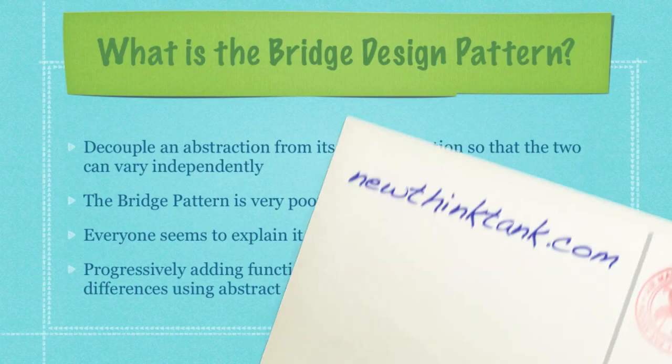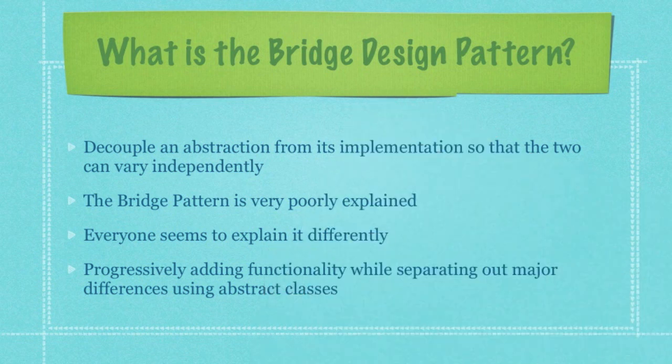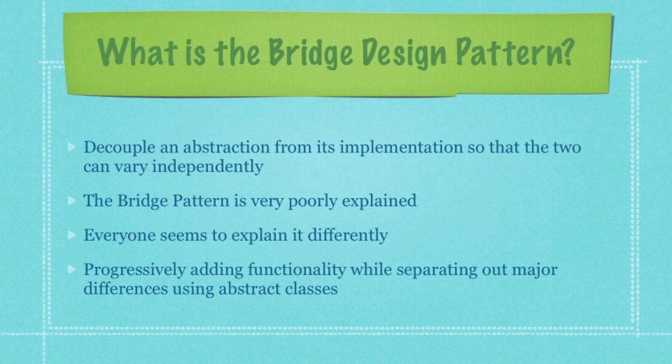So what is the bridge design pattern? The official definition is to decouple an abstraction from its implementation so that the two can vary independently. That is a bunch of gobbledygook, and I have found through numerous different tutorials that the bridge pattern is often very poorly explained or glossed over completely, and everyone seems to explain it differently. My basic definition is to progressively add functionality while separating out major differences using abstract classes.